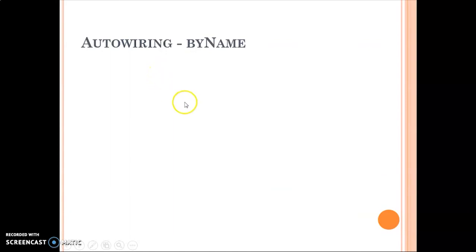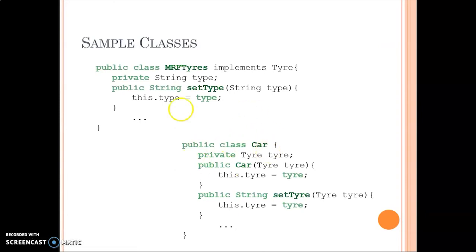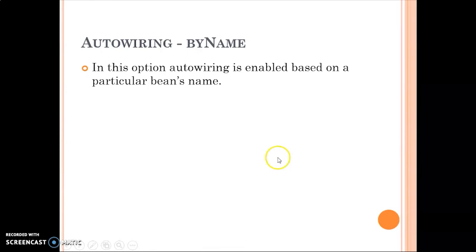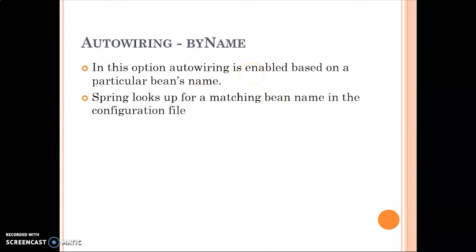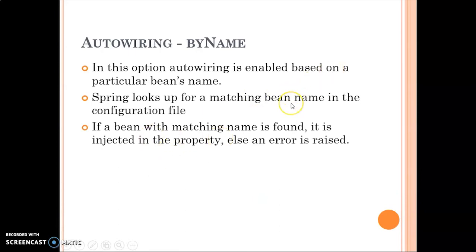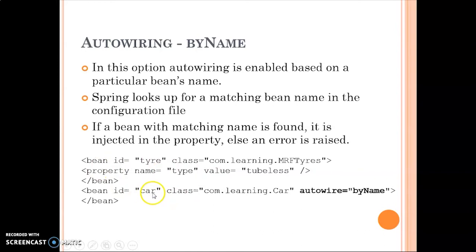The next type is auto-wiring by name. In the Car class we have a variable or property defined with the name 'tire'. When auto-wiring by name is enabled, Spring looks up a matching bean name in the configuration file. The name with which the object is defined in the Car class has to match the bean id in the configuration file.